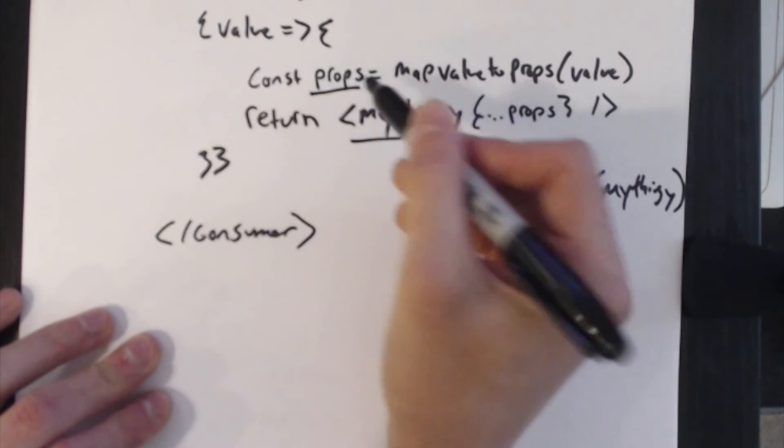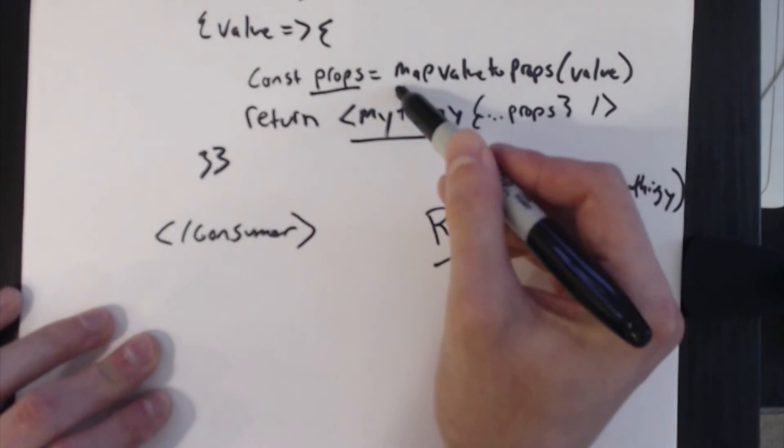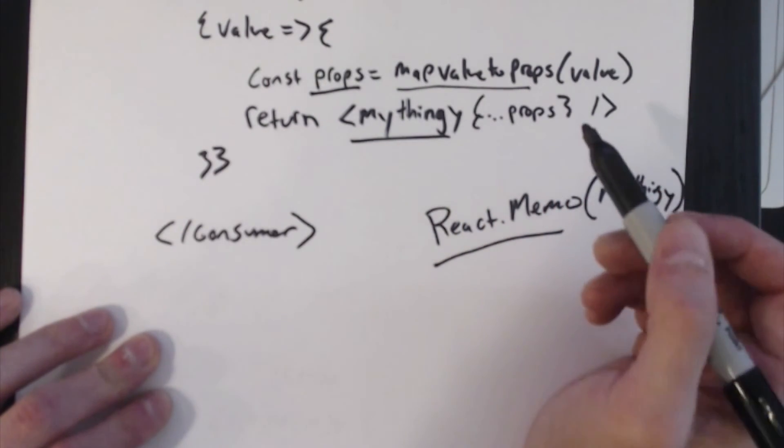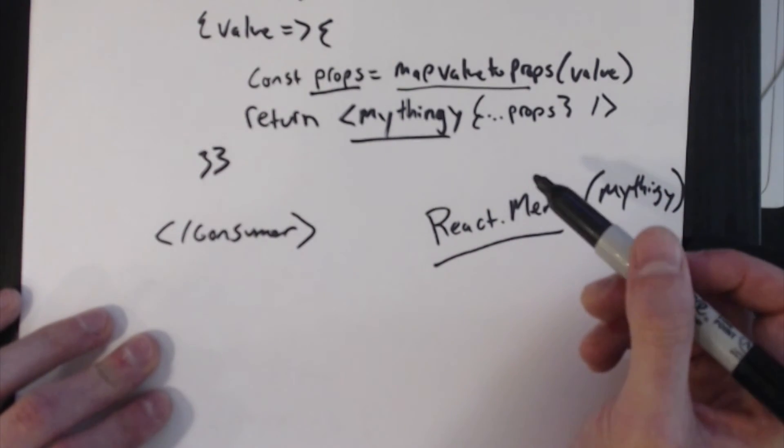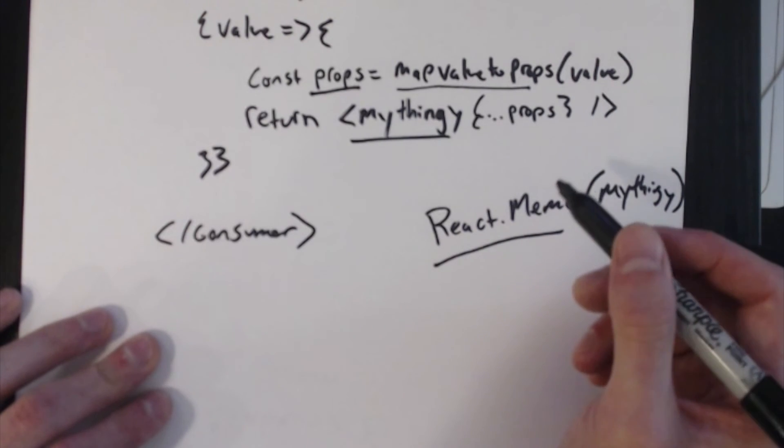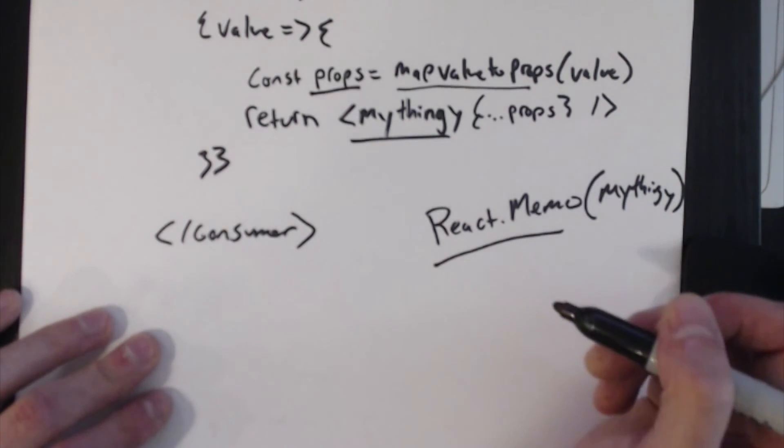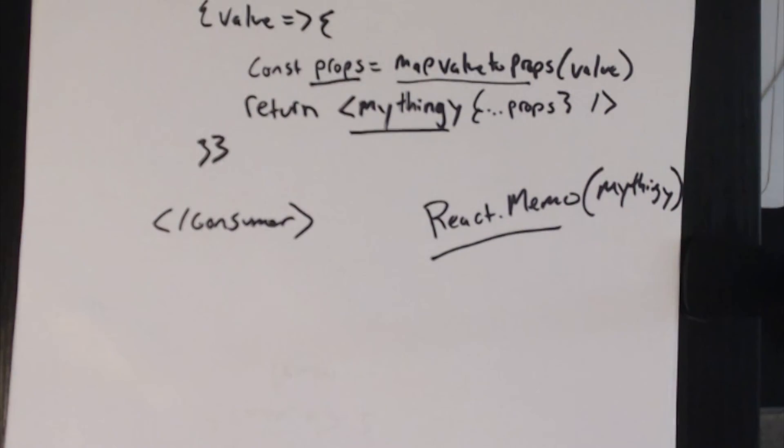So up here, props is once again a subset of the context value—it's a slice of the state from our state manager up the tree.